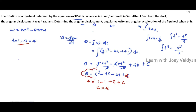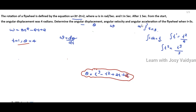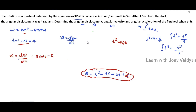Next, we calculate the angular acceleration alpha. Alpha equals d-omega divided by dt. Differentiating omega equals 3t squared minus 2t plus 2: the derivative of 3t squared is 6t, the derivative of 2t is 2, and the derivative of the constant 2 is 0. So alpha equals 6t minus 2.